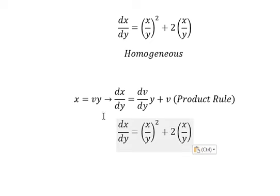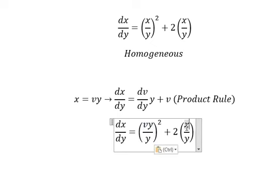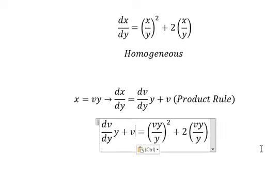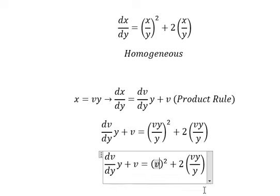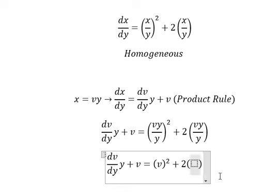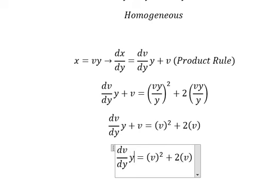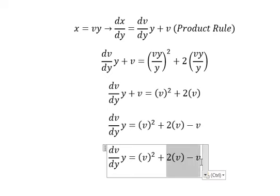So x is vy, and substituting this into the equation, this one is v and this one is v. Then 2v minus v gives us v on the right side.